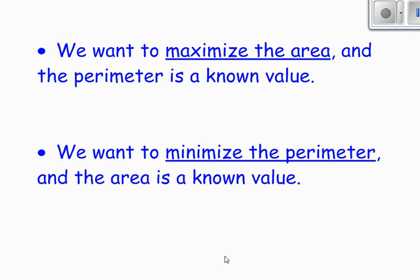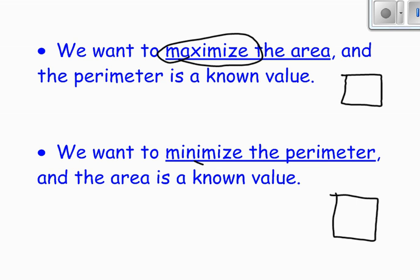So the best rectangle you can make ends up being a square. And I said this in the other video, yes a square is a rectangle, it's just a special rectangle. So again, the optimal rectangle is a square. And more specifically we discovered that we want to make, if we want to maximize the area and the perimeter is a known value, we make a square.